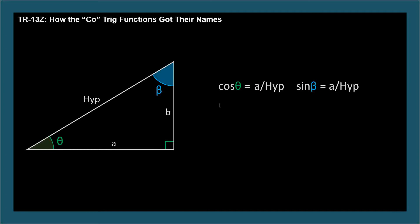The ratio for cotangent theta is the reciprocal of tangent, which SOHCAHTOA reminds us is opposite over adjacent. So cotangent is adjacent over opposite, which for theta is A over B. These ratios are covered in TR-14 if you need a review. And tan beta is opposite over adjacent, which for beta is also A over B.